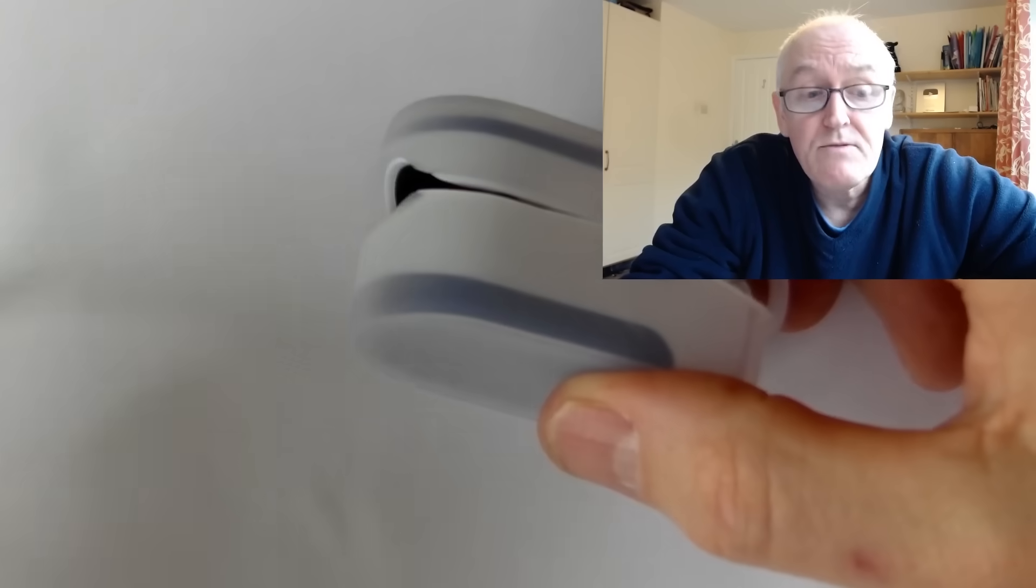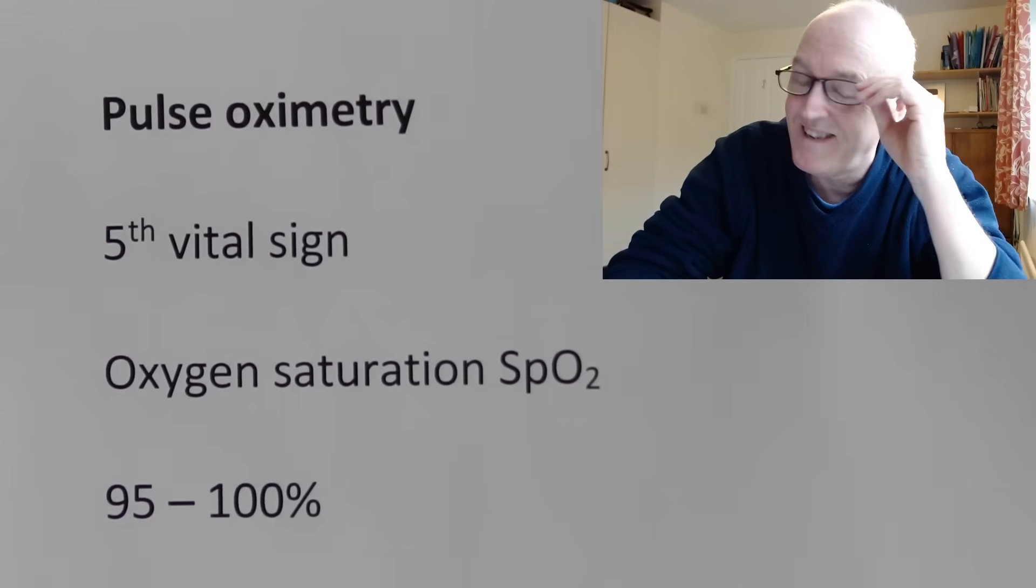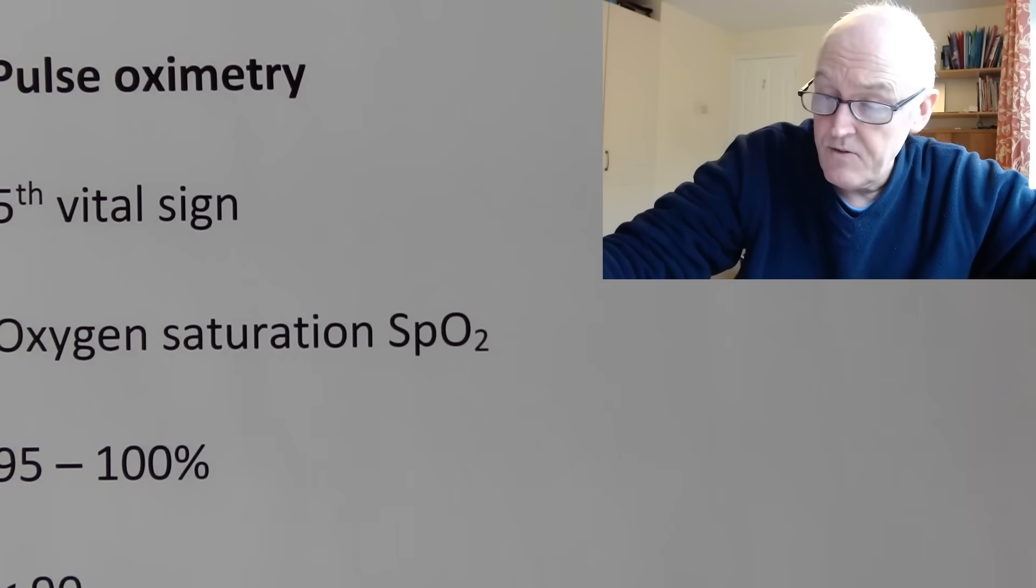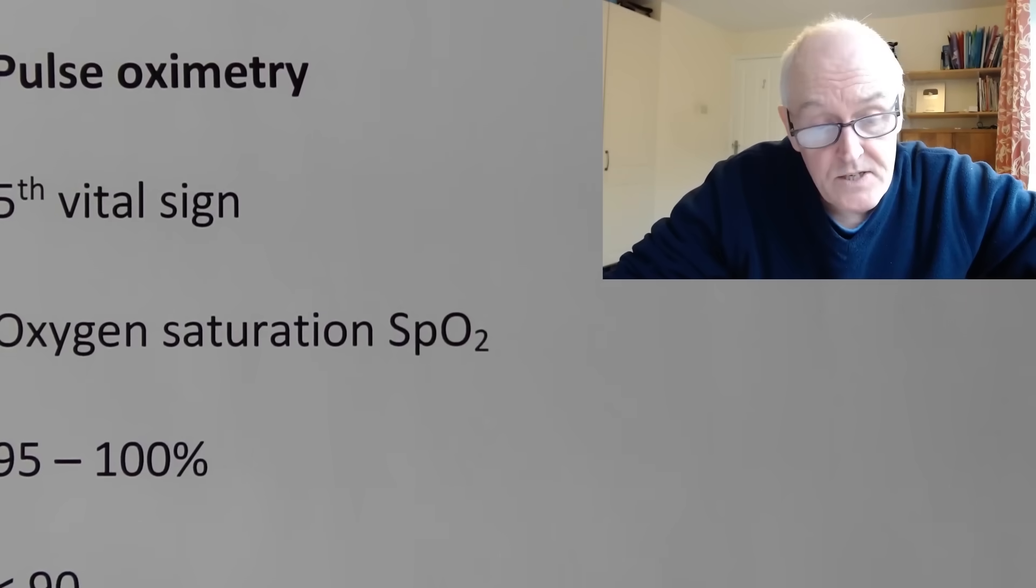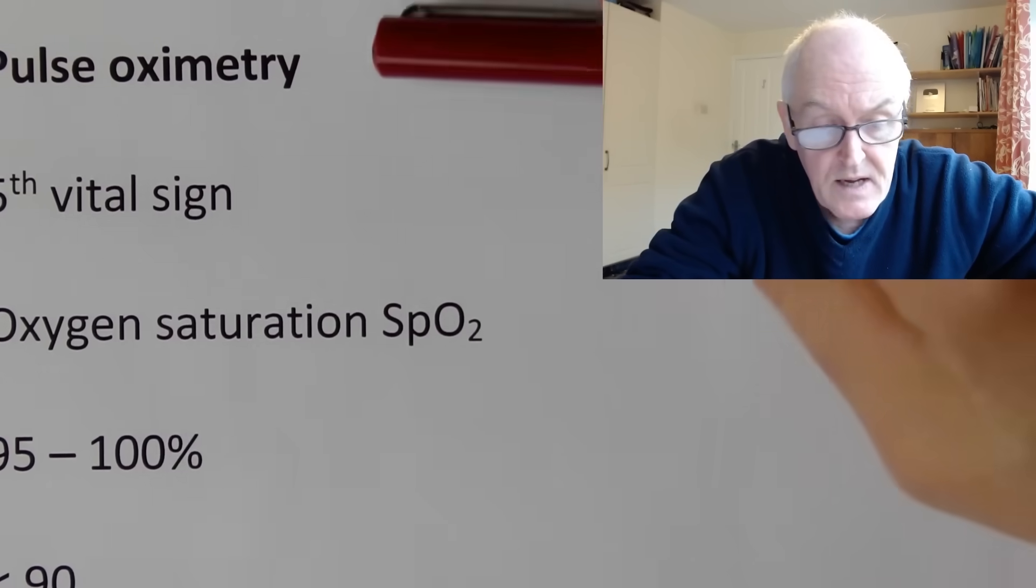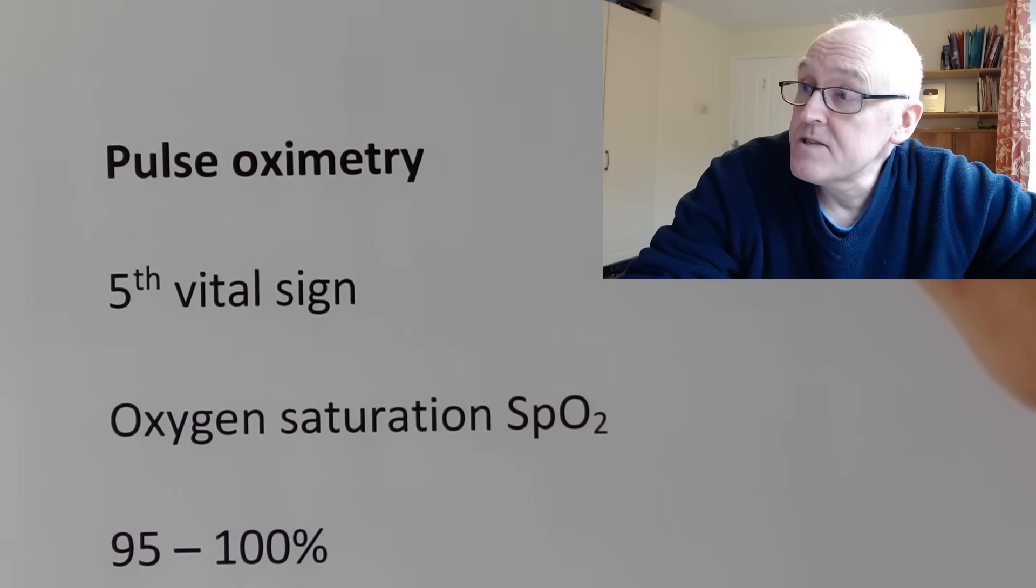These used to be really expensive but now they're relatively cheap, about 20 pounds. I have no vested interest, but it's the sort of thing you could afford at home quite easily. It's called pulse oximetry and it's described as the fifth vital sign.